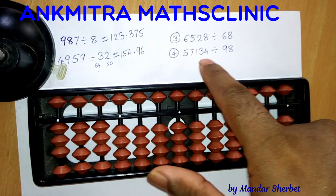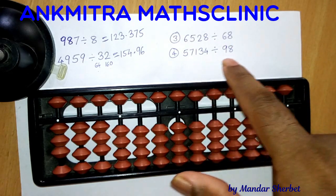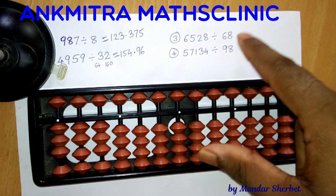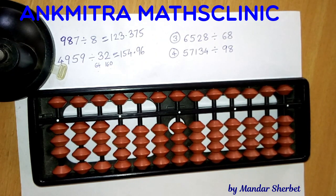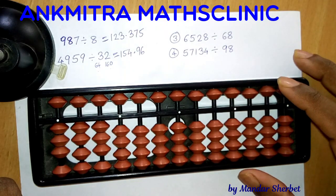And another example where we have a five-digit number divided by a different two-digit number. Both two-digit numbers are fairly large, so nobody is expected to know the tables of these numbers easily. Let's have a look at how we can solve this.